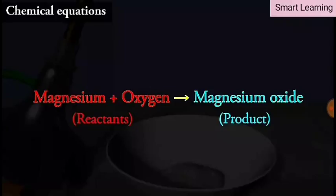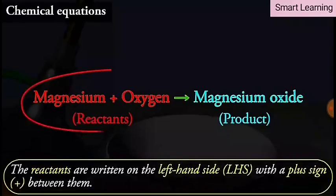A word equation shows changes of reactants to products through an arrow placed between them. The reactants are written on the left hand side, that is LHS, with a plus sign between them.